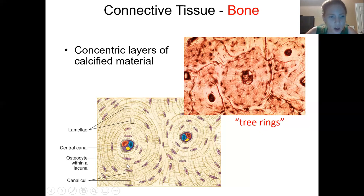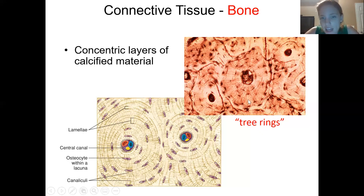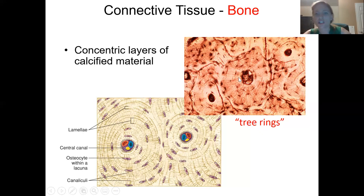So to summarize the osteon: the big circle in the middle is the central canal; one concentric layer is a lamella; the dark spots sandwiched between the lamellae are the osteocytes, which live inside lacunae; and radiating out of the lacunae, those little black lines are the canaliculi, which allow osteocytes to communicate and pass nutrients to each other.